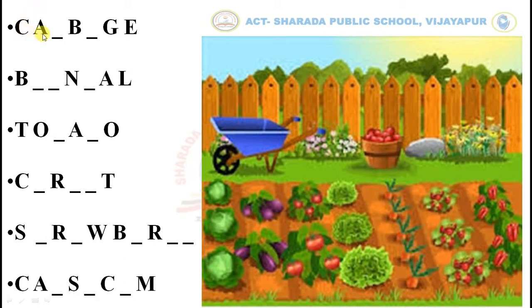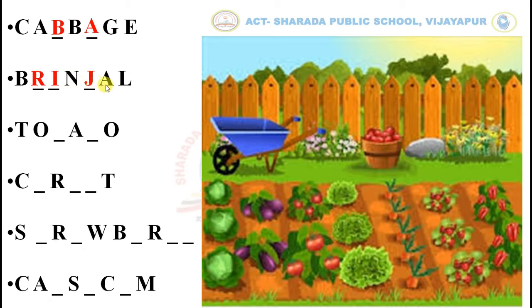C-A-B-B-A-G-E, Cabbage. You can see the first row. B-R-I-N-J-A-L, Brinjal. You can see the second row here. T-O-M-A-T-O, Tomato. You can see the third row here.